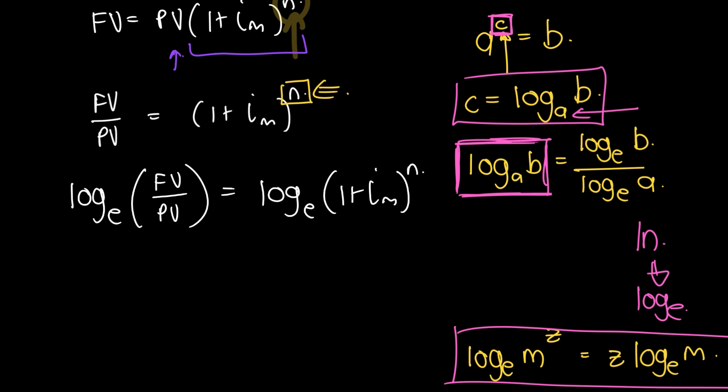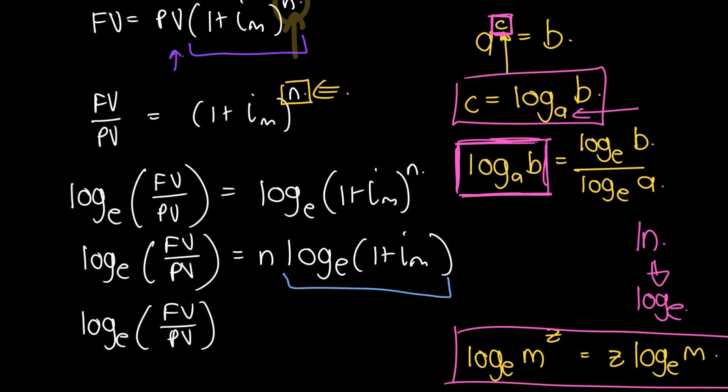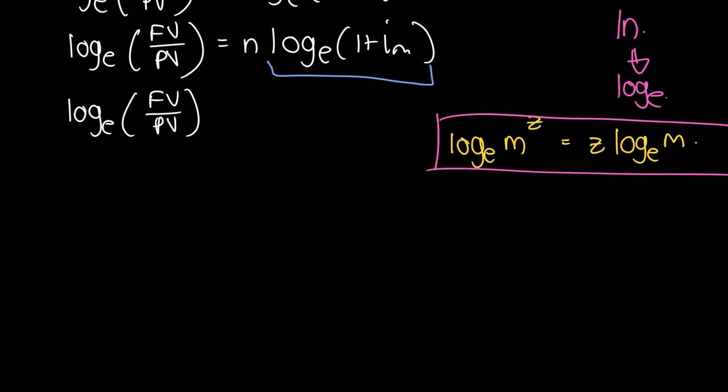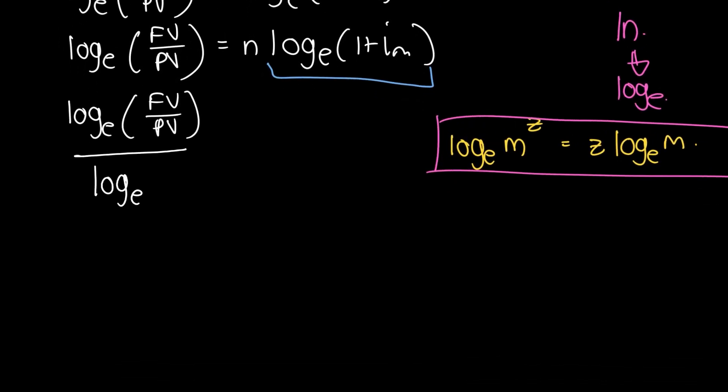The natural log is just log base e. I'm going to write it out the long way now so you can get familiar with it. We take the natural log of both sides, so we have log_e(FV/PV) equals log_e((1+i_m)^n). From the power rule, we can take the n out front: n times log_e(1+i_m). We can divide through by this term, so we have log_e(FV/PV) divided by log_e(1+i_m) equals n.